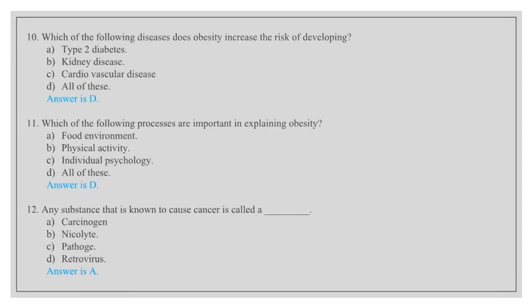Which of the following diseases does obesity increase the risk of developing? Type 2 diabetes, kidney disease, cardiovascular disease, all of these. Answer is D, all of these. Which of the following processes are important in explaining obesity? Food environment, physical activity, individual psychology, all of these. Answer is D, all of these.